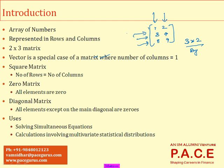If we link this to the chapter on vectors, a vector written in i-j-k notation or matrix notation is also a matrix. The only difference is that for a vector, the number of columns is always equal to one. So a vector is a special case of a matrix where the number of columns is always one.